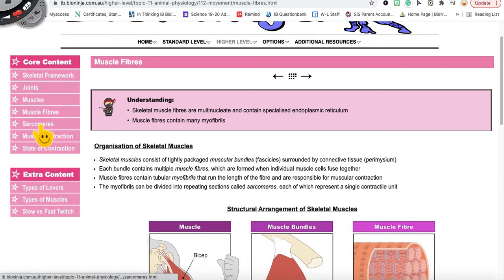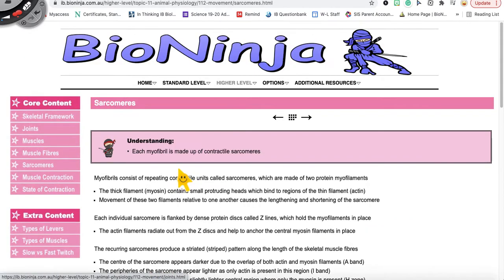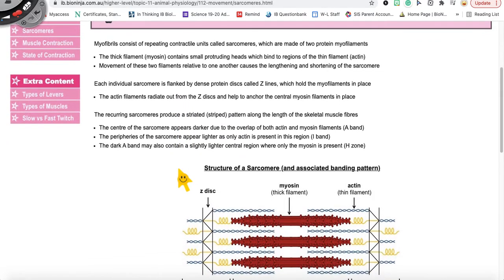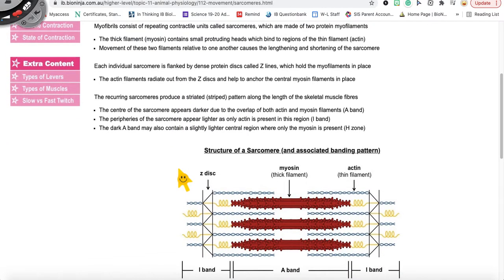So let's go back here to the sarcomeres and let's look at some of the structure here. All right, so first thing you need to know is that the sarcomeres are made up of two protein myofilaments.